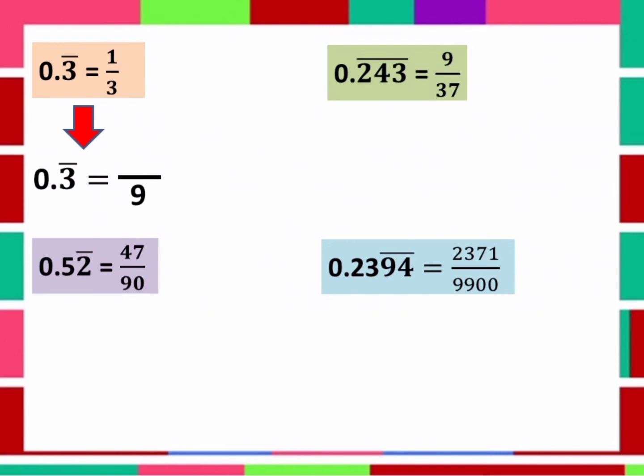And to get the numerator, just write 0.3 with a bar without the decimal and the bar. Ulitin ko para mas mag-gets. Para makuha ang numerator, tingnan mo yung given. 0.3. So we write 3 in the numerator. Simple as that. Then, 3 over 9 can be reduced to lowest term, so it will become 1 third. Easy right?